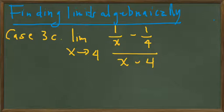We have our third example, and let's identify it as being a 0 over 0 limit. So if we plug 4 in, we get a 4th minus a 4th in the numerator, which is 0, and 4 minus 4 in the denominator, which is 0.